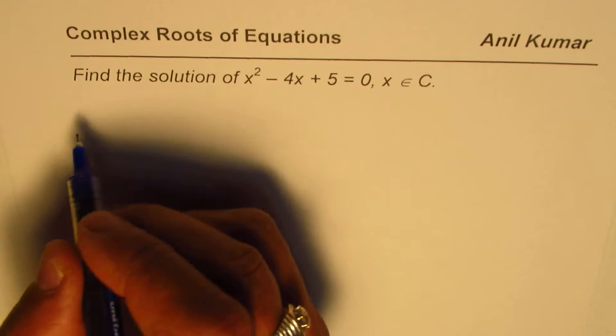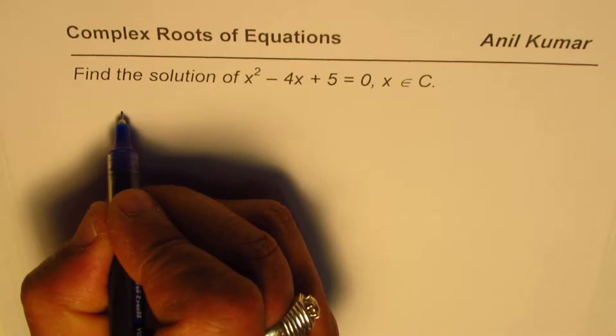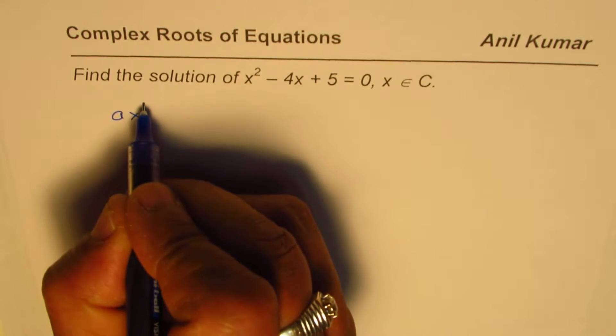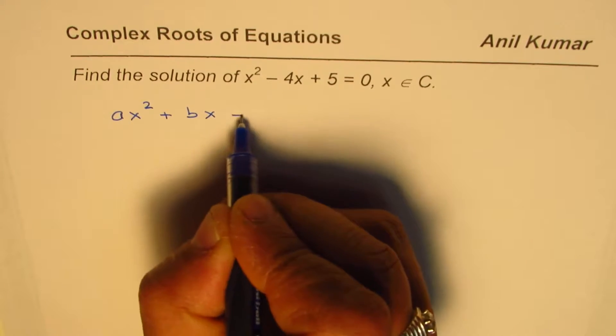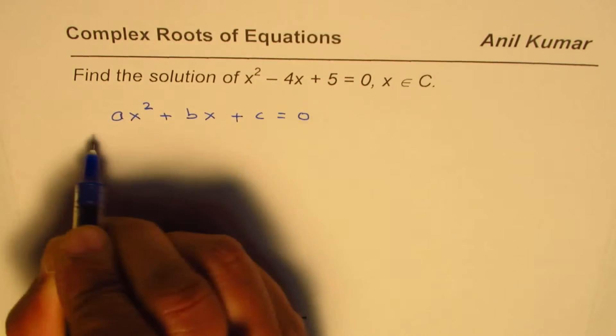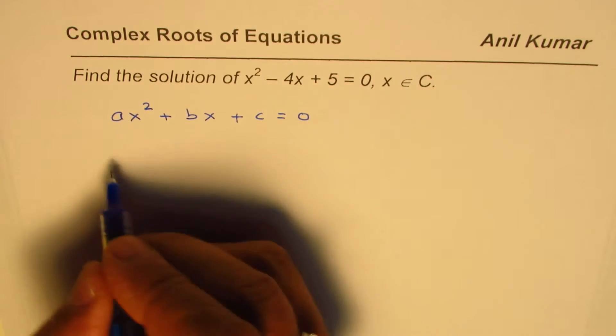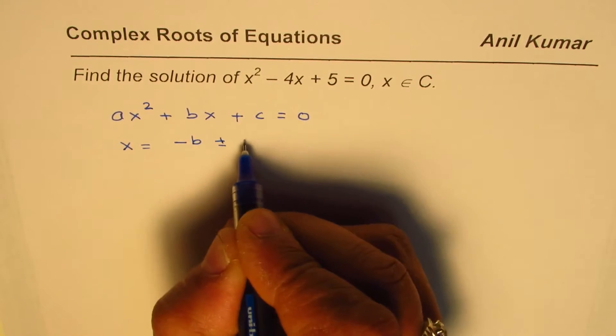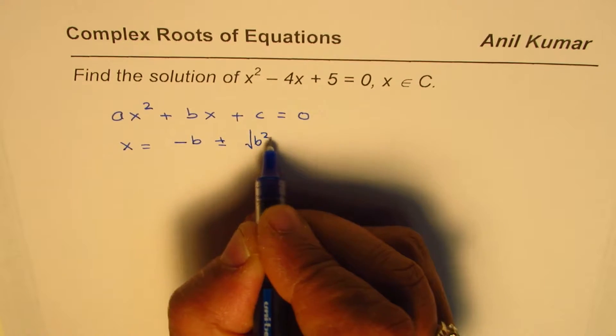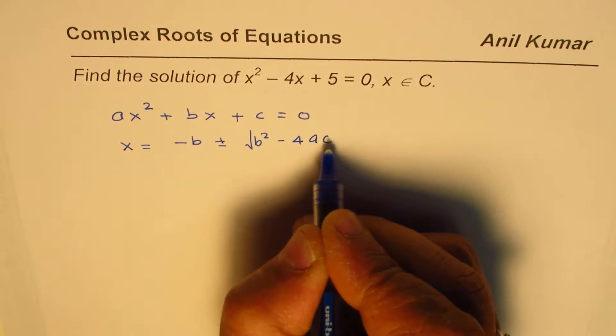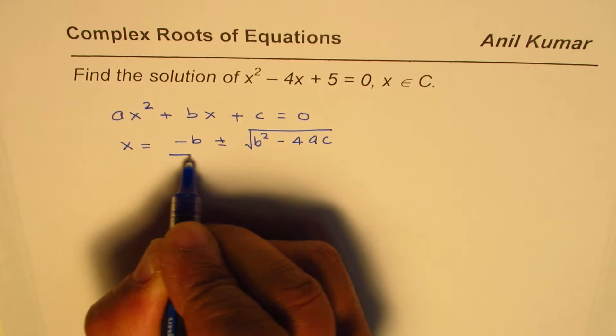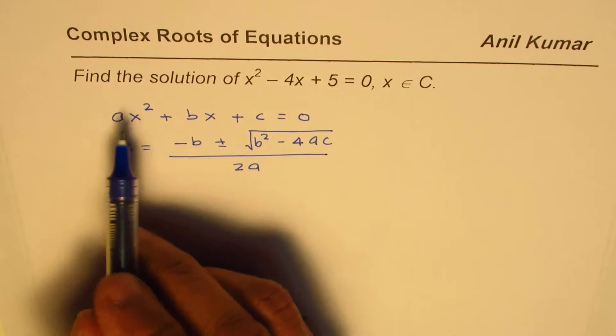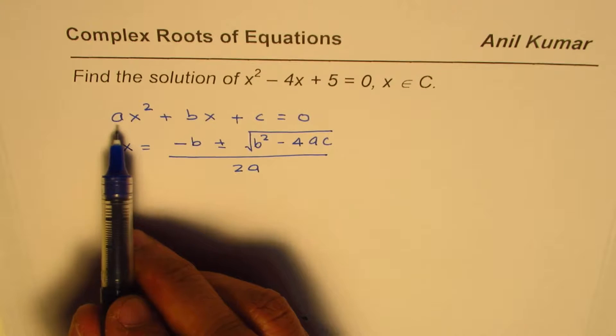Let me remind you how to solve a general quadratic equation which is ax² + bx + c = 0. The solution of this equation is x = (-b ± √(b² - 4ac)) / 2a, where a, b, and c are the coefficients.